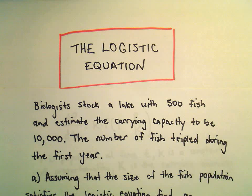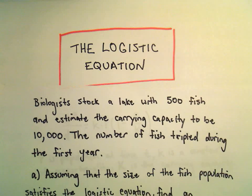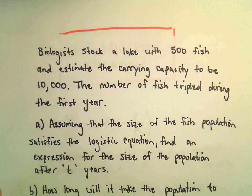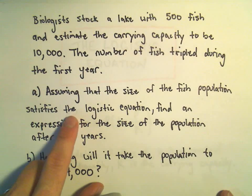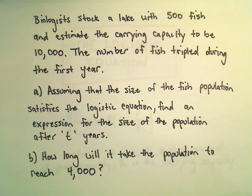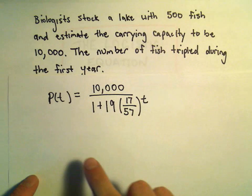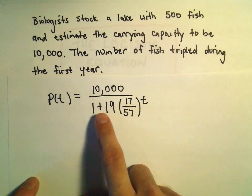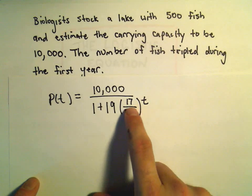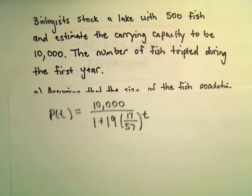All right, this is going to be part two of our problem dealing with the logistic equation. And again, here we had a problem with biologists stocking the lake. So in part A, which we've already done, we figured out a formula for the population at time t. We said the population at time t was 10,000 divided by 1 plus 19 times 17 over 57 raised to the t.